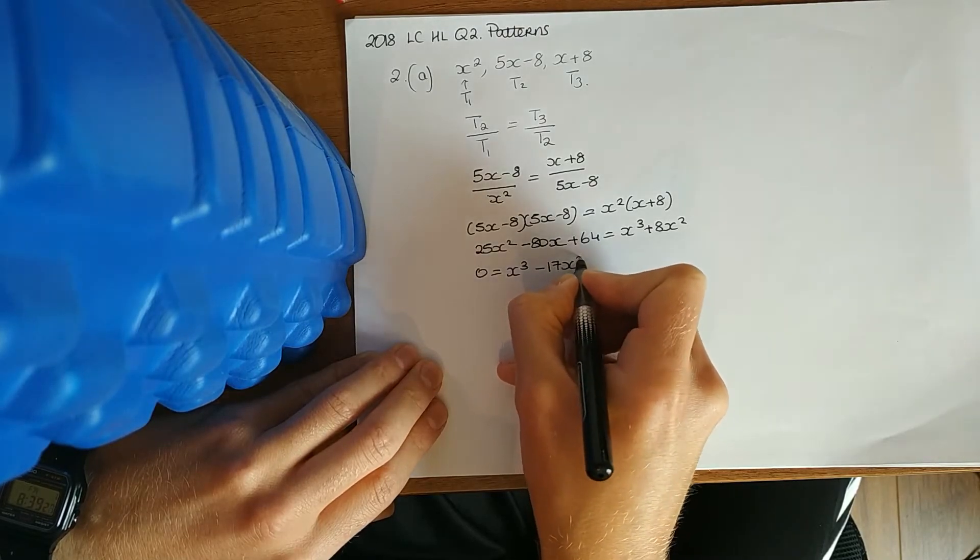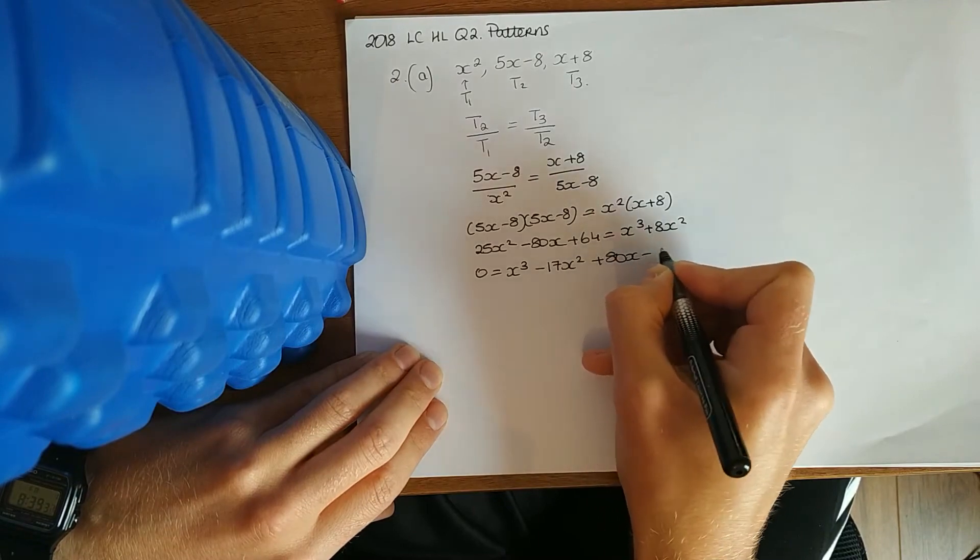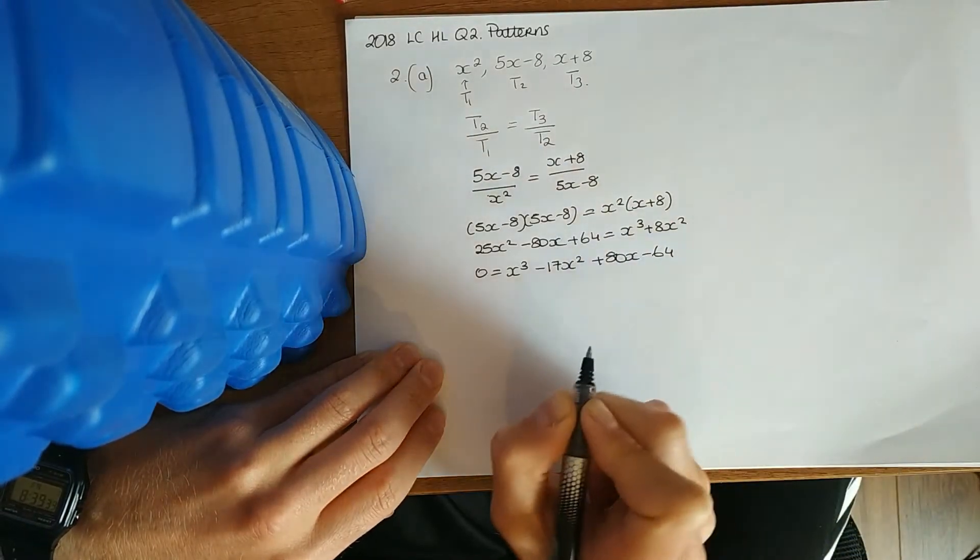Minus 17x squared, just to be sure. Plus 80x minus 64, yeah, we're right. So that's our cubic.